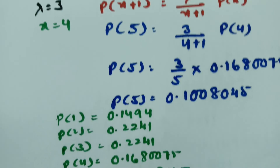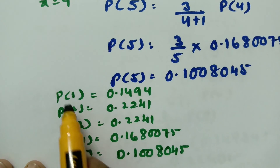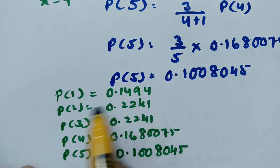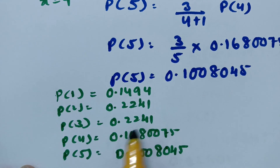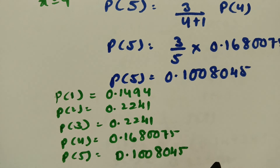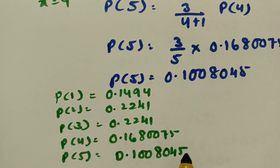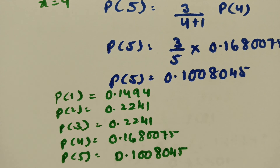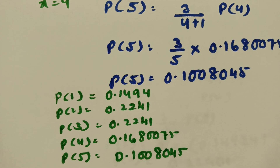This is how we solve for probabilities P(1), P(2), P(3), P(4), and P(5) using the recurrence formula for Poisson distribution. Thank you so much for watching, and please share if you liked this video.